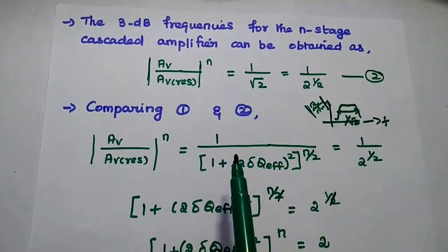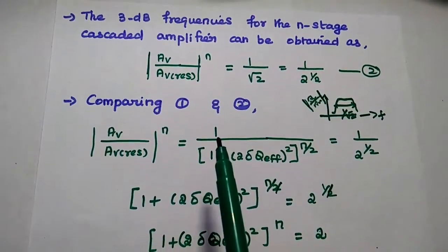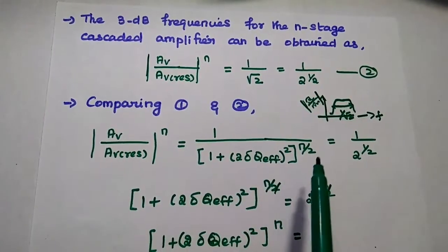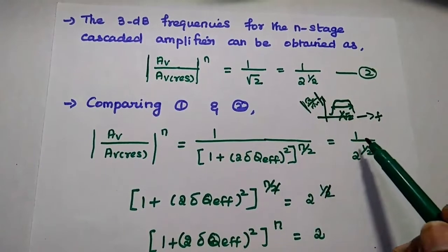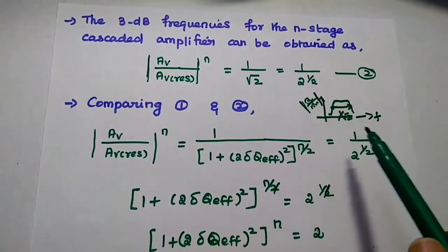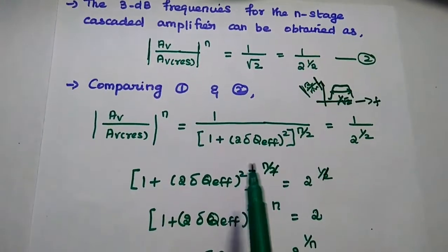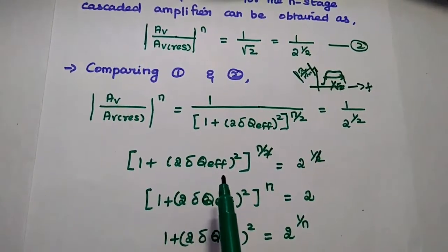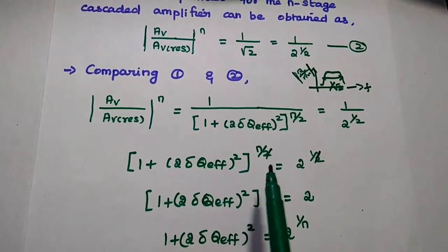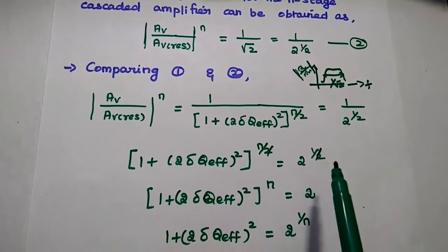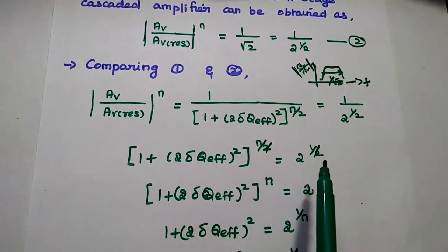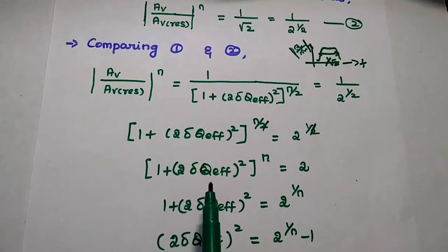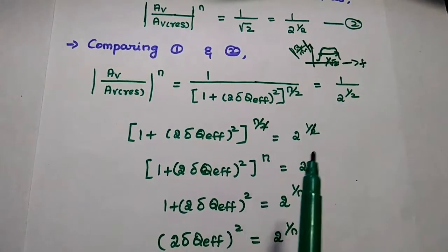Now we compare equations 1 and 2: (1 plus (2·δ·Q)²)^(n/2) equals 2^(1/2). Since the numerators are equal, we equate the denominators. The 1/2 exponents cancel, giving 1 plus (2·δ·Q)² raised to the power n equals 2.